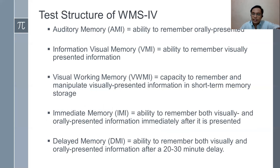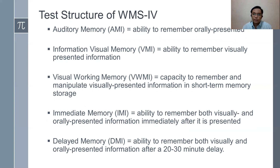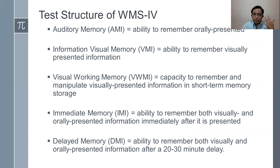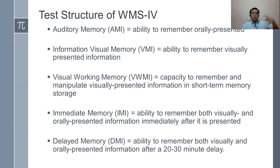Now we will do an in-depth analysis of the structure of Weschler Memory Scale 4. It has five index scores: auditory memory — the ability to remember orally presented information; visual memory — ability to remember visually presented information; visual working memory — the capacity to remember and manipulate visually presented information in short-term memory storage; immediate memory — the ability to remember both visually and orally presented information immediately after presentation; and delayed memory — the ability to remember both visually and orally presented information after a 20–30 minute delay.